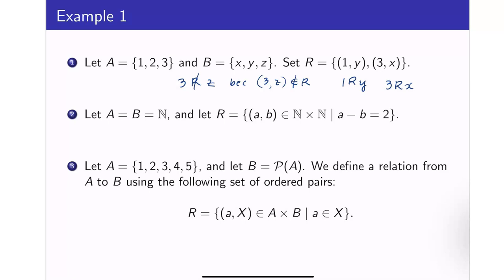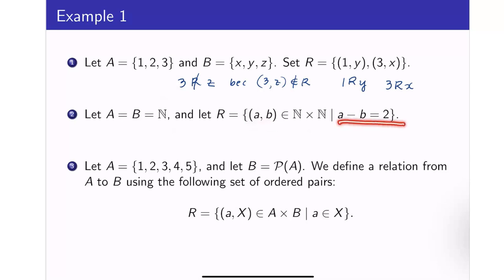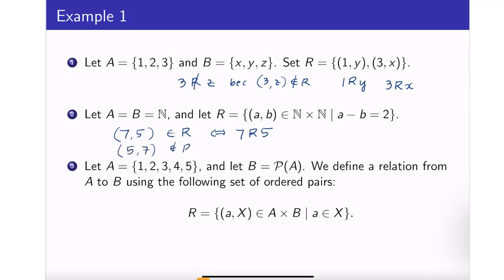Now suppose that our A and B is the set of natural numbers, so we have a relation on N, the set of natural numbers. The set of ordered pairs such that A minus B is equal to 2 — this is saying that A will only be related to B if A is bigger than B by 2. So (7, 5) is in R because 7 minus 5 equals 2, so 7 is related to 5. But (5, 7) is not in R because 5 minus 7 equals negative 2, so 5 is not related to 7.